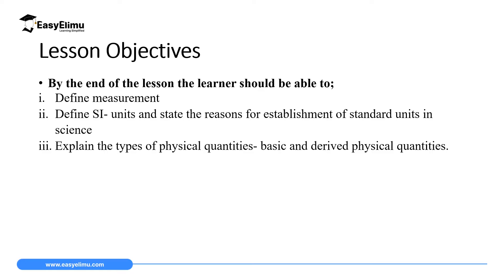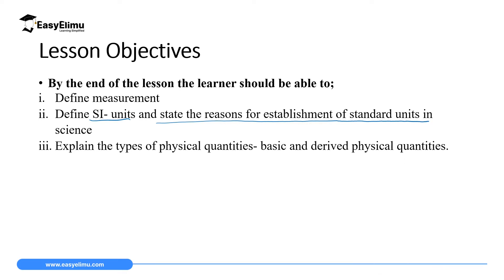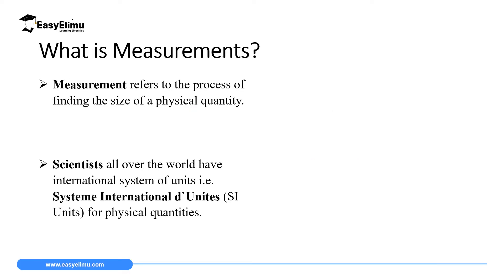By the end of this lesson I expect you to be able to define measurement, define SI unit and state the reason for establishment of SI units in science, and then finally explain the types of physical quantities — which you are going to state as basic quantities and derived quantities. By the end of this lesson you should be able to distinguish the two and even explain more about them.